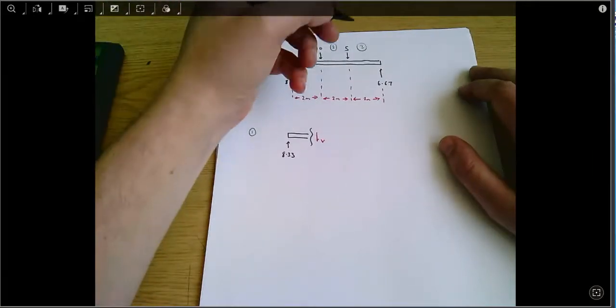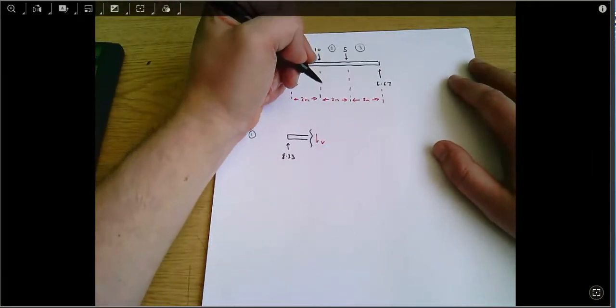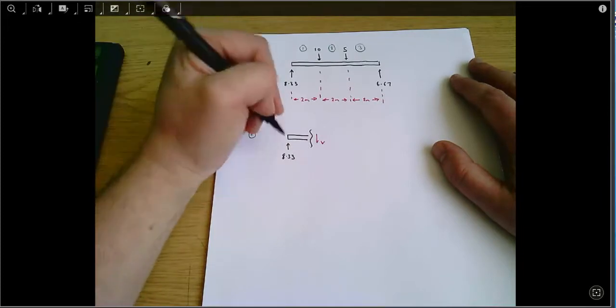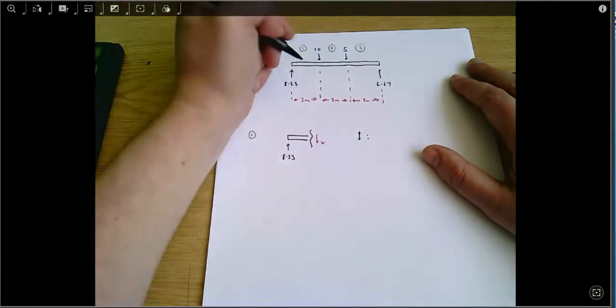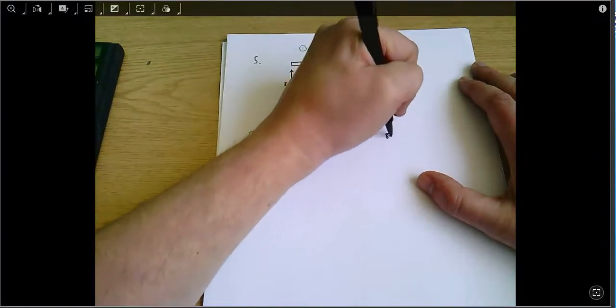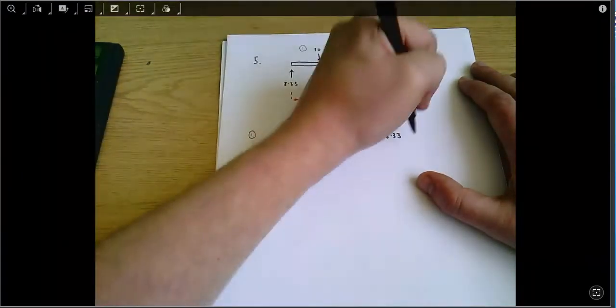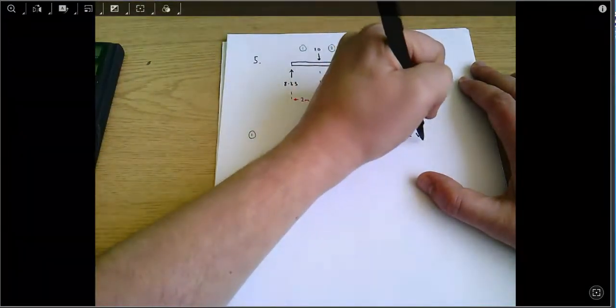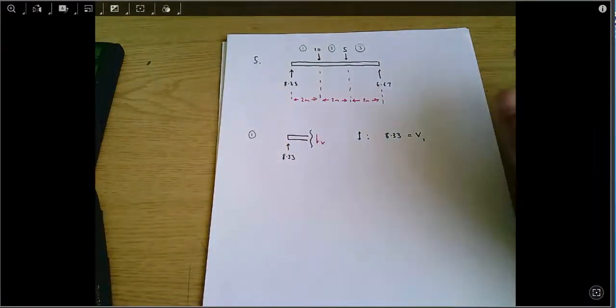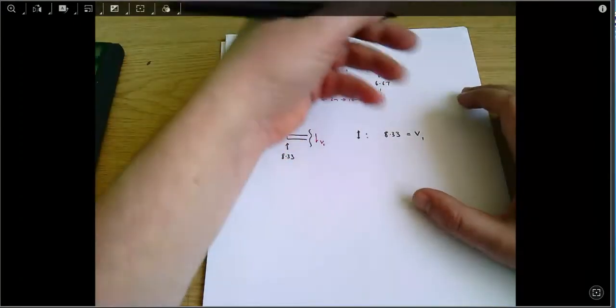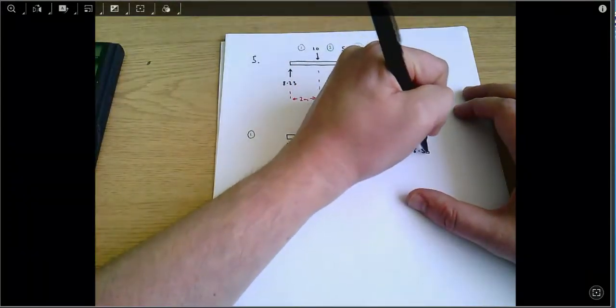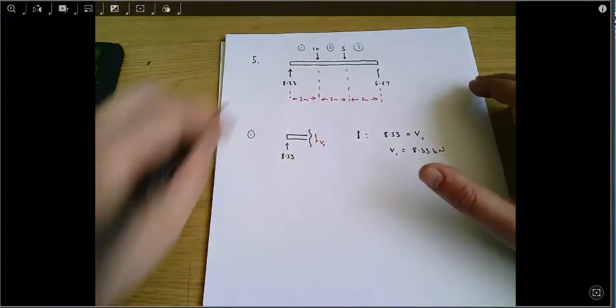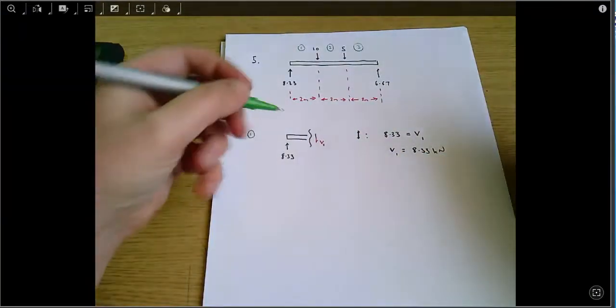And this gives me that the shear force forces acting upwards equal forces acting downwards using vertical equilibrium, which means that 8.33, the forces acting upwards, equals V, I'll call it V1 just to show it's the shear force in section 1. So trivially that means V1, the shear force in section 1, is 8.33 kilonewtons and that's the first part of the answer done.